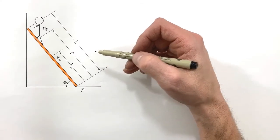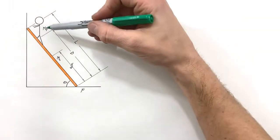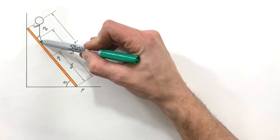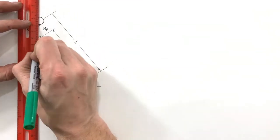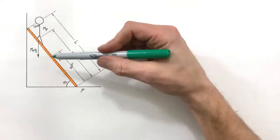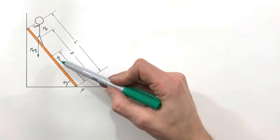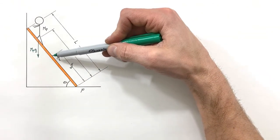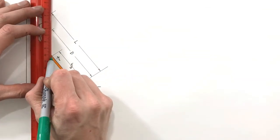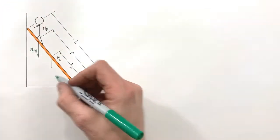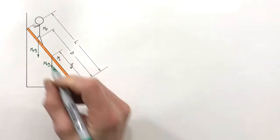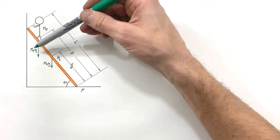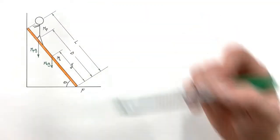This is a statics problem just like any other, so first we'll identify all the forces at work. Looking at gravity: the person has some mass, so there is a gravitational force acting downward where the person is standing. The ladder also has mass ml, and that gravitational force acts on the ladder at the center — right in the middle — so there's a downward force of ml times g there.